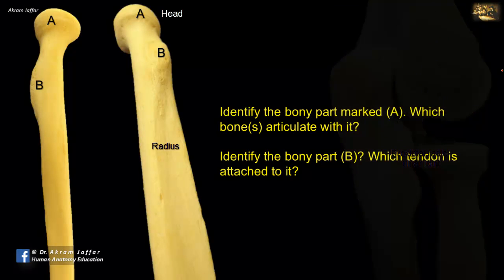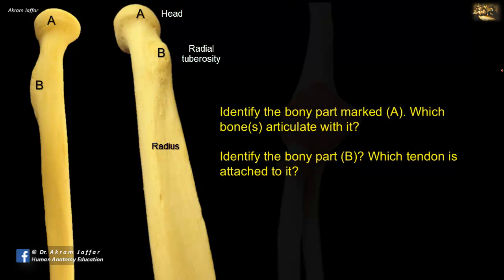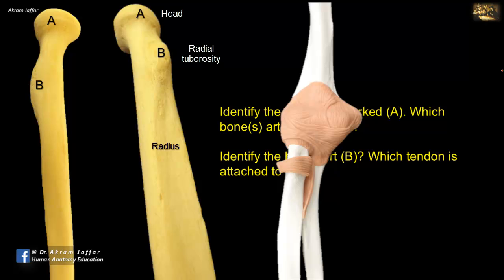B is the radial tuberosity, and it provides attachment for the tendon of biceps brachii muscle. Thus, biceps can act on the radius and rotate it in supination.